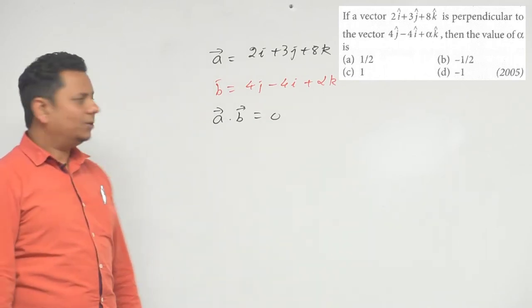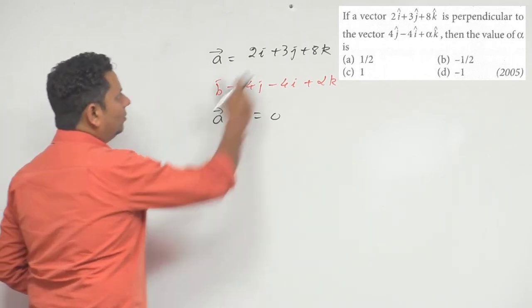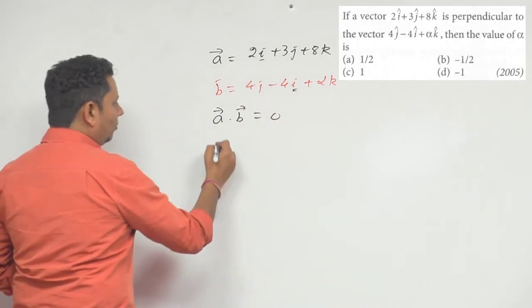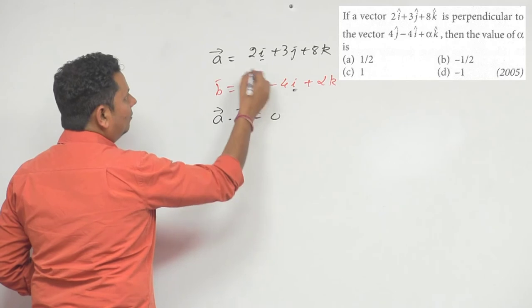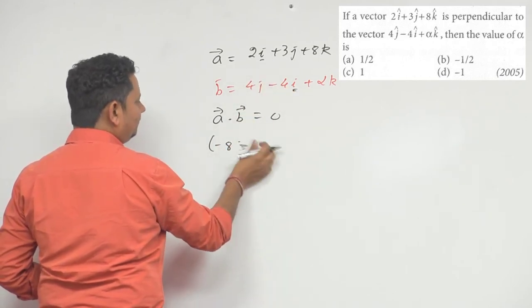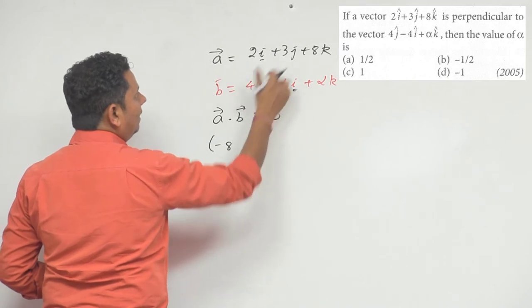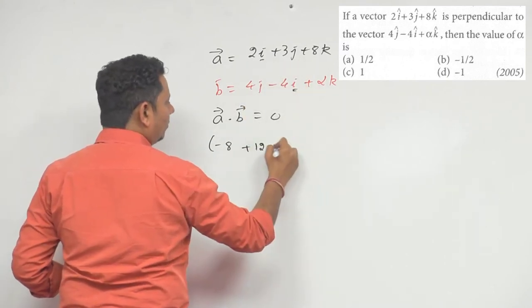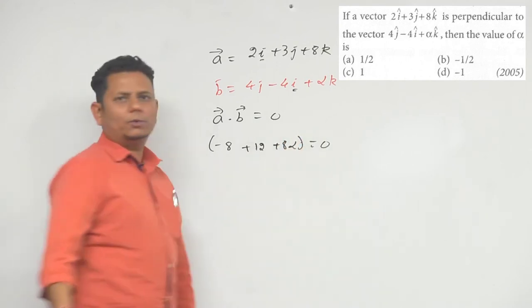then a dot b equals zero. So in that case, we take the dot product of both. Remember this is i cap and this is i cap, so when we multiply these and take the dot product, it will be this multiplied by this equals minus 8, and this will be equal to plus 12, and this will be equal to plus 8 alpha equals 0.